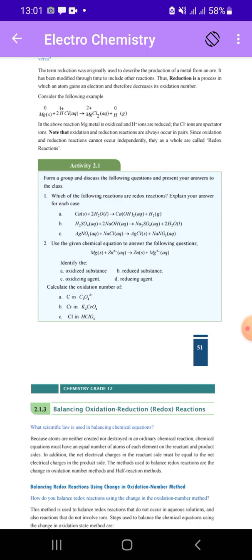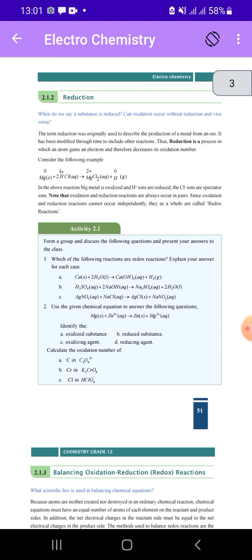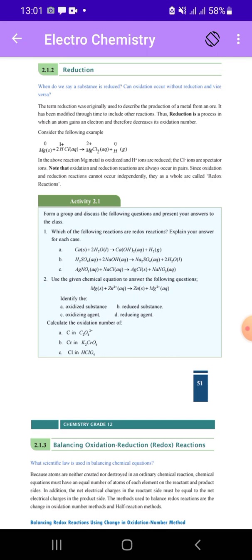Magnesium oxidation number changes. Hydrogen oxidation number changes from plus one to zero. Oxidation number increases to two.